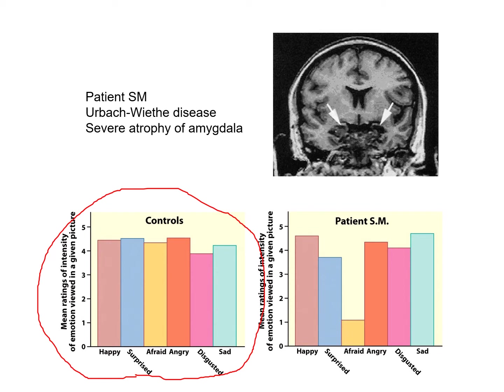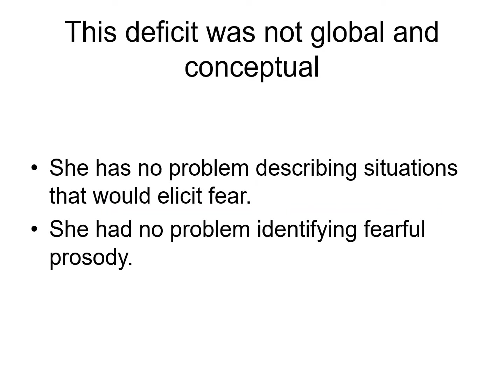When it comes to patient SM, she was able to gauge the intensity of emotion pretty well for happiness, surprise, anger, disgust, and sadness. But something she was not very good at is she was not able to tell when a person is expressing the facial expression of fear.